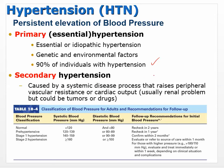Secondary hypertension is hypertension caused by some other disease. If you have kidney failure or kidney injury, that can cause hypertension — the real problem is the kidney, and one of the secondary effects is hypertension. Tumors can cause it too; if you fix the tumor, you fix the hypertension. Drugs can also cause hypertension a lot of times.